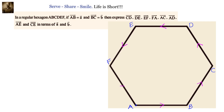We have a regular hexagon A, B, C, D, E, F. The property of a regular hexagon is that all the sides are equal and all the interior angles are equal.